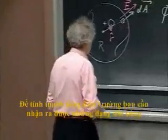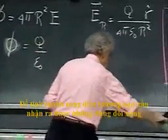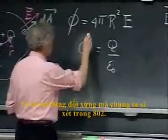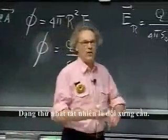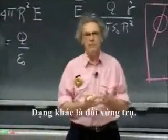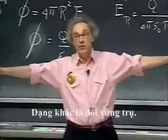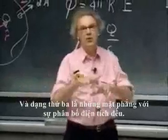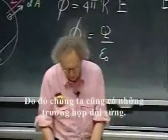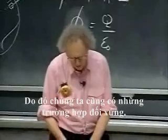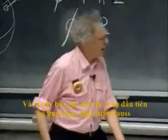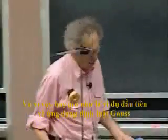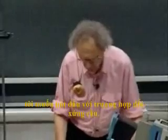In order to calculate the electric field successfully you do need symmetry. There are three forms of symmetry we will deal with in 8.02: spherical symmetry, cylindrical symmetry, and flat planes with uniformly charged distributions. As a first example, I will use an application of Gauss's law, starting with a situation of spherical symmetry.